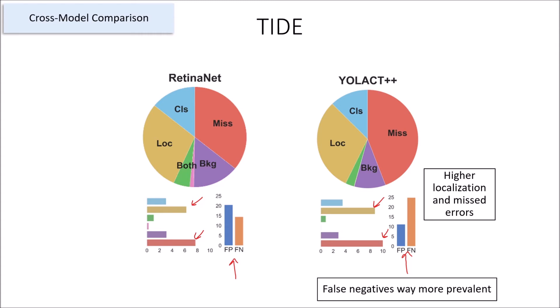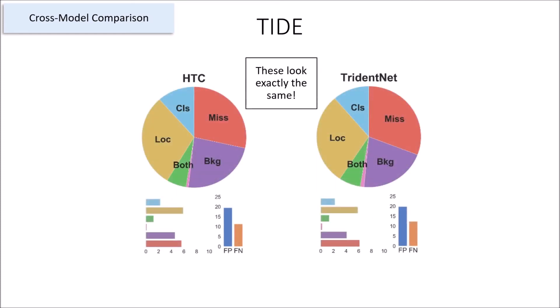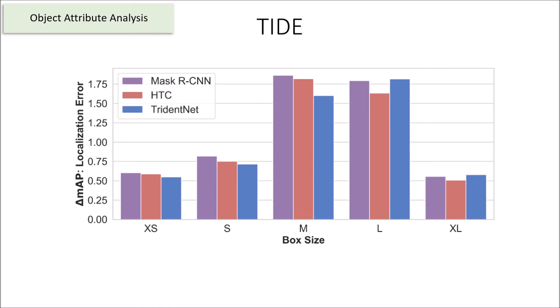However, there are cases where the summary cards wouldn't be enough. Let's consider a comparison between HTC and TridentNet. Both models have remarkably similar error profiles, so to understand the difference between the two, we'll need to delve deeper. To do this, we'll take a look at performance across different scales, since TridentNet focuses specifically on scale invariance. With TIDE, we can compute our errors across different object attributes by simply limiting the errors we fix to those with the specified attribute. Here's the localization error of HTC and TridentNet across different scales of boxes, with Mask R-CNN for reference. We can see from this finer analysis that while HTC and TridentNet have the same localization error overall, it's really that TridentNet has less error on medium objects, and HTC has less error on large objects. These two differences end up cancelling out, but if you're someone looking to detect medium objects, you would use this information to choose TridentNet over HTC.